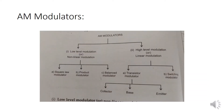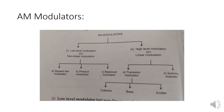In this AM modulator, we are having two types: one is low-level modulation or non-linear modulation, and high-level modulation or linear modulation. In non-linear modulation, we are having three types: square law modulator, product modulator, and balanced modulator. In linear modulation, we are having two types: transistor modulator and switching modulator.